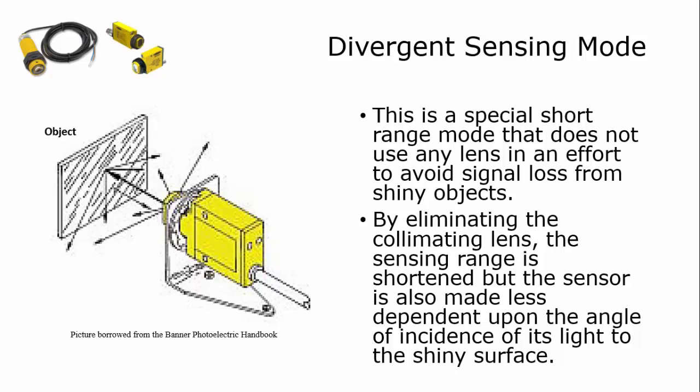By not putting a collimating lens, the sensing range gets shorter. Without that lens on the front to get light coming back off of an object, the sensor has to get closer, and that way I'm not really dependent upon the angle of the light coming back, and therefore I can sense some shiny objects with it.